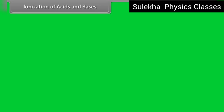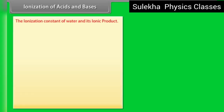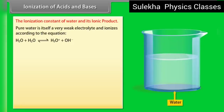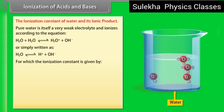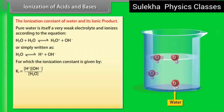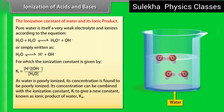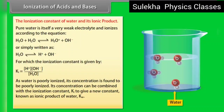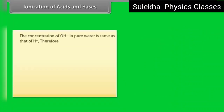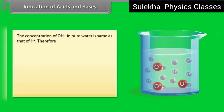Ionization of acids and bases — the ionization constant of water and its ionic product. Pure water itself is a very weak electrolyte and ionizes according to the equation. The ionization constant Ki is equal to the concentration of H+ multiplied by the concentration of OH− divided by the concentration of H2O. As water is poorly ionized, its concentration can be combined with Ki to give a new constant known as the ionic product of water, Kw.